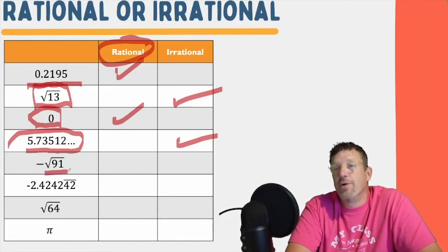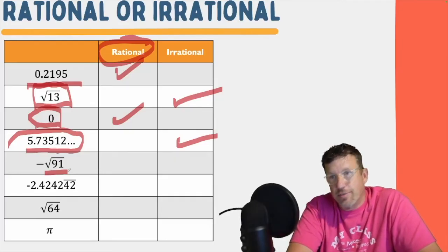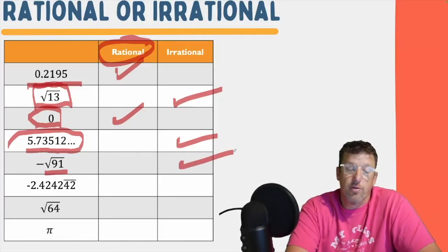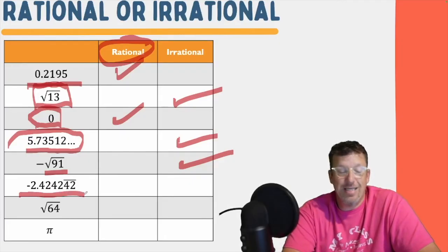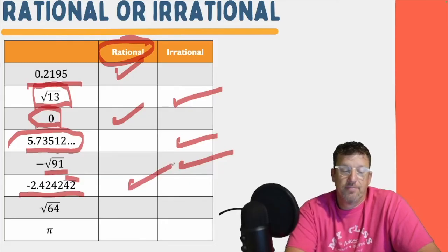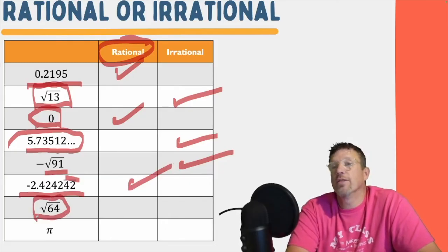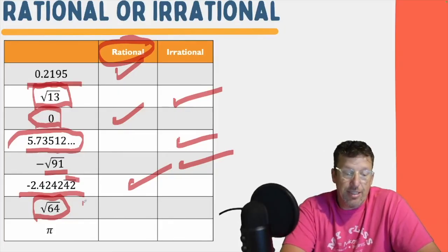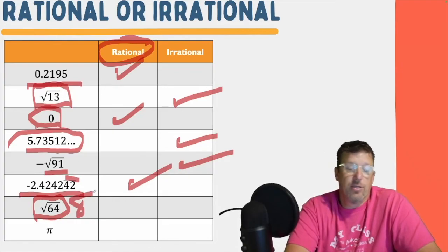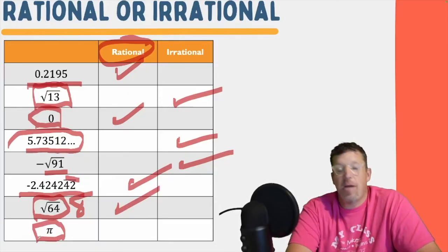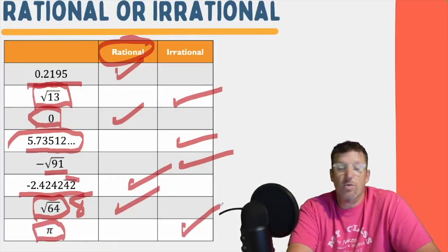The opposite of the square root of 91 — 91 is not a perfect square, which means it's a decimal that will go on forever, so that's irrational. Negative 2.4242424 — I see that 4, 2 pattern — that's a decimal with a repeating pattern, so that's rational. The square root of 64 — 8 times 8 is 64, so the answer is 8. And 8 is a counting number, it's an integer, it's a whole number, it's a rational number. And finally, pi — because it's a decimal that goes on forever — is irrational.